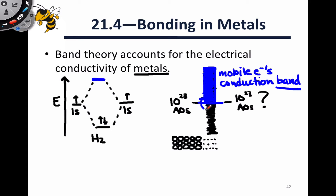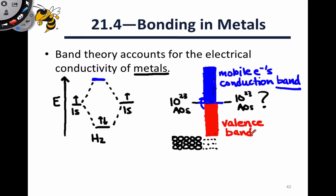On the other hand, the band of orbitals below the atomic orbital energies is typically fully occupied with electrons from the metal atoms. Specifically, these are occupied by the valence electrons of the metal atoms, and thus this is called the valence band. Electrons in the valence band are not conducting because the valence atomic orbitals are generally localized on the atoms within the structure.